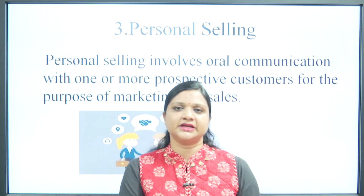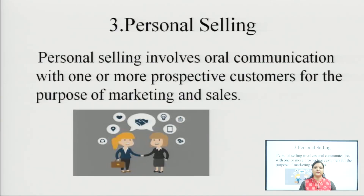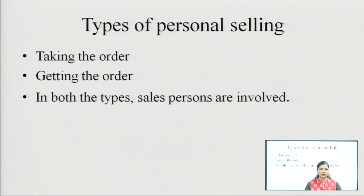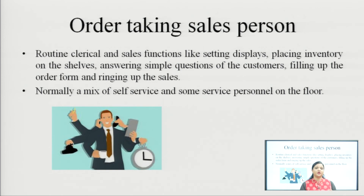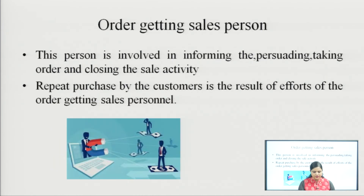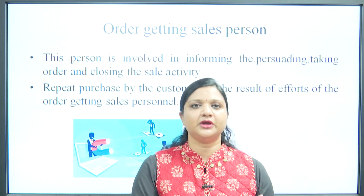Next is personal selling. Selling is done by directly interacting with the customer — the representative of the company directly interacts with the customer and promotes or spreads information about the offerings or establishment to the concerned customer. Types of personal selling: order taking and order getting. Order-taking sales persons are involved in activities like setting displays, placing inventory on shelves, answering simple questions, filling up order forms, and ringing up sales — normally a mix of sales service and service personnel on the floor. Order-getting sales persons are involved in persuading, informing, and closing the sale, and they also expect repeat purchases from the customer.